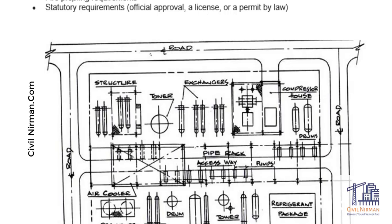P&IDs - Piping and Instrument Diagrams - are performed by chemical engineers, who detail what processes need to be performed in the plot plan. In P&IDs you can see from where to where the pipes will be flowing, which pipe goes to which structure, and what instruments are required to measure the pipe flow or pressure inside the pipe.